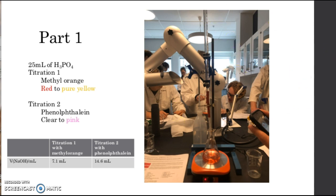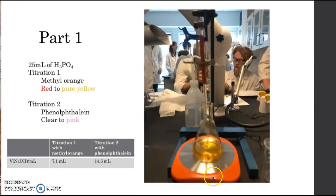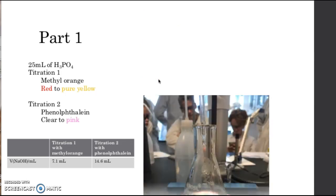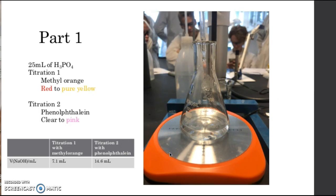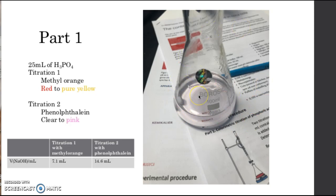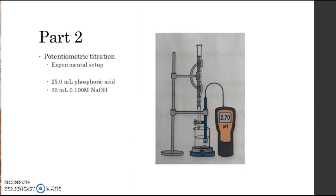Here you can see a picture of the experimental setup. We have the conical flask with the red solution which is the methyl orange, and a burette filled with sodium hydroxide which we are adding into the solution with phosphoric acid. When we had added 7.1 milliliters of the sodium hydroxide, the solution turned pure yellow as you can see in the picture. Here we also have a picture of titration 2 showing the clear solution and then the faint pink color reached after adding 14.6 milliliters of sodium hydroxide.